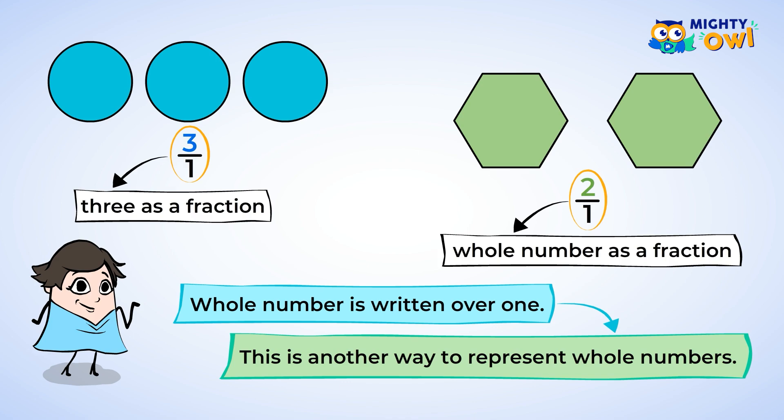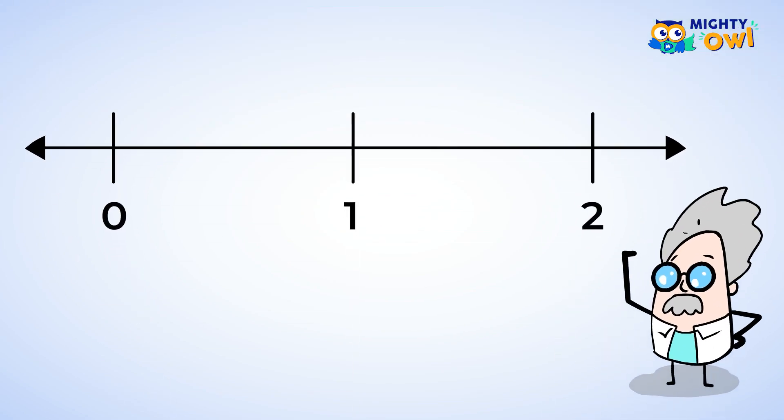Let's try this using a number line. We have already looked at splitting the number line up into parts. If we split it into three parts, we have one-third, then two-thirds, and then three-thirds.